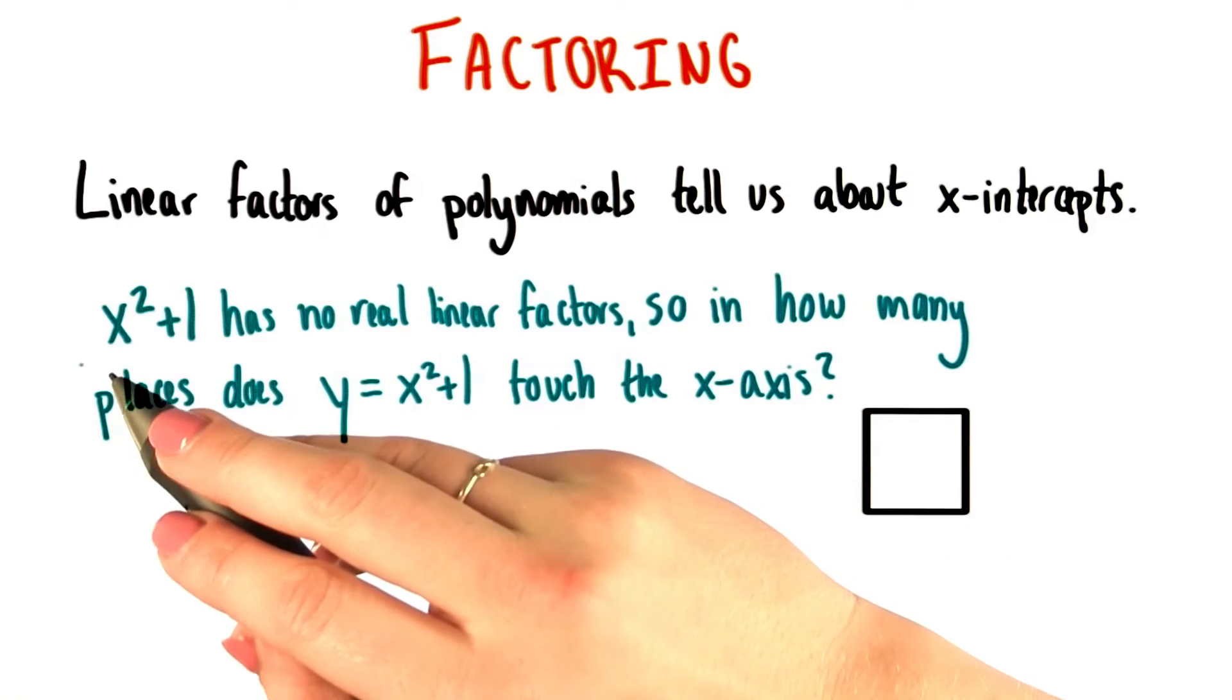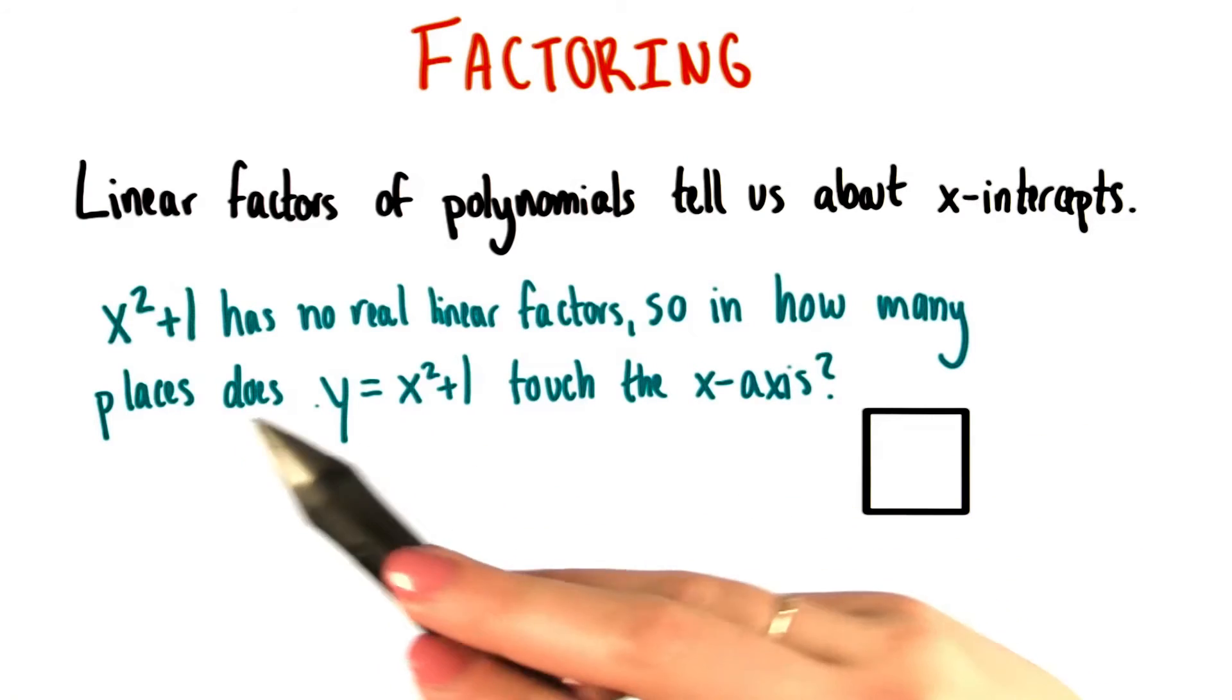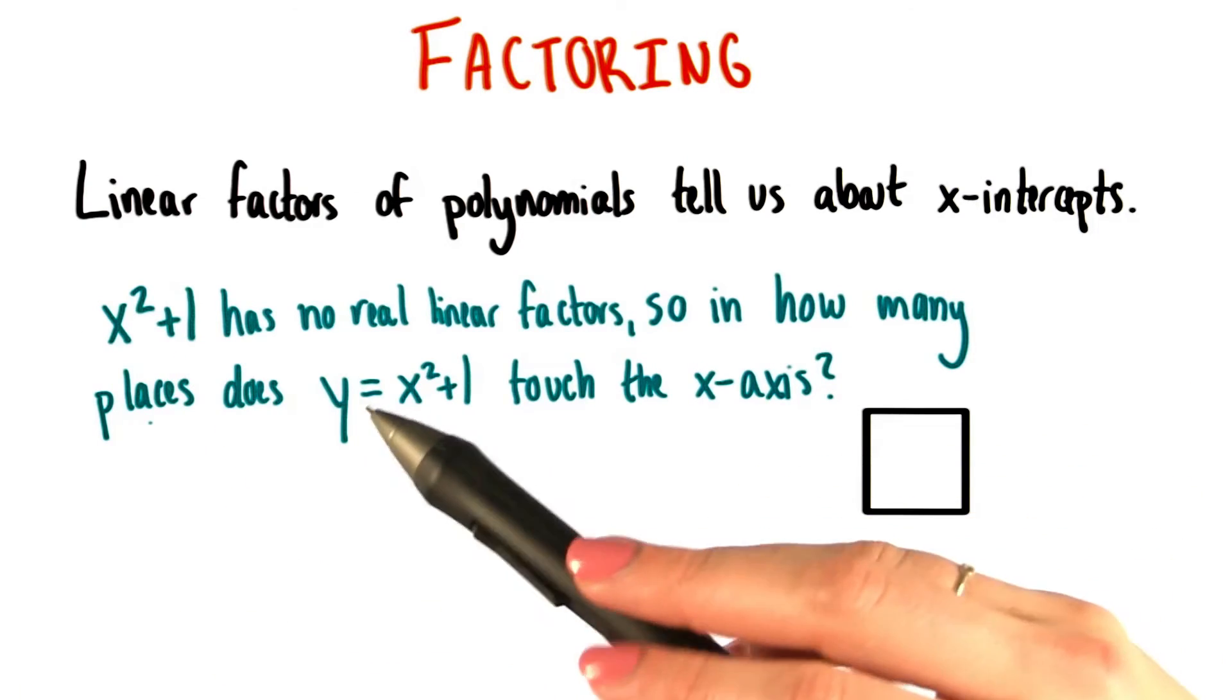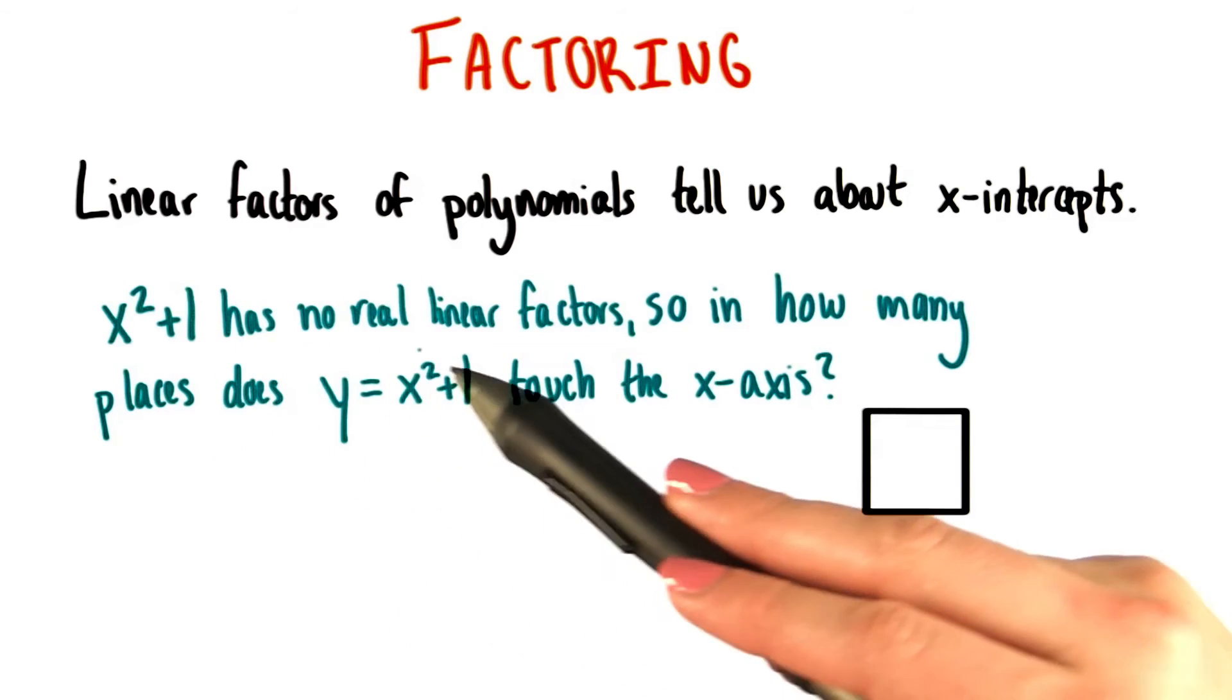In the last quiz, we learned that x squared plus 1 is not factorable. However, I'm going to extend our statement about x squared plus 1 and tell you that it is not only not factorable, but it actually has no real linear factors.